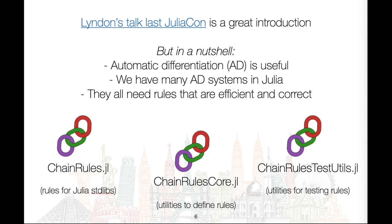Linden's talk at last JuliaCon is a great introduction to automatic differentiation and the ChainRules project. Very briefly, the main takeaways are that automatic differentiation is useful, that we have many AD systems in Julia, and that they all need rules that are efficient and correct.